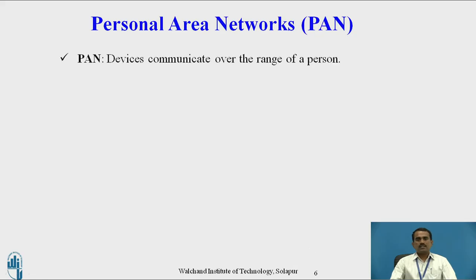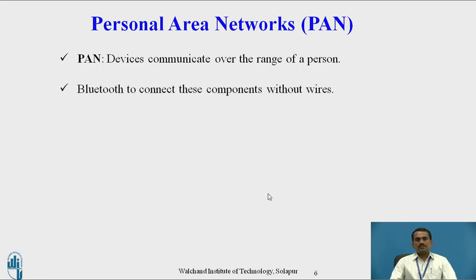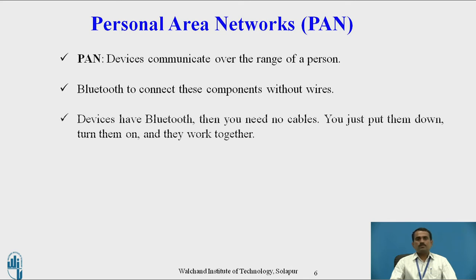The first one is the Personal Area Network. PAN devices communicate over the range of a person. In PAN devices, a limited area and limited distances are covered. Bluetooth is used to connect these components without wires. If PAN-connected devices are in one place, it can cover that limited area.